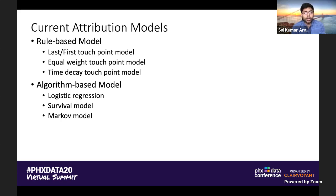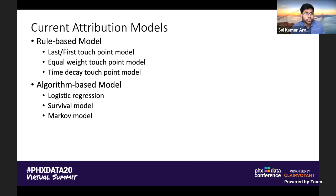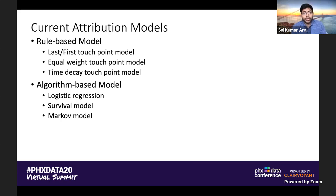Similarly, the equal weight touch point model is another heuristic that doesn't reflect reality, since some touch points at key moments in the journey contribute more toward conversion. The time decay touch point model gives more contribution to touch points closer to conversion, but determining the decay factor relies on prior beliefs and is not data-driven. The industry has therefore developed algorithmic-based models — such as logistic regression, survival models, and Markov models — which are more data-driven and help marketers draw more reasonable conclusions.